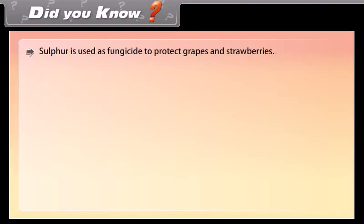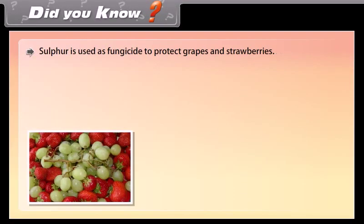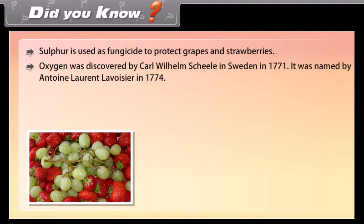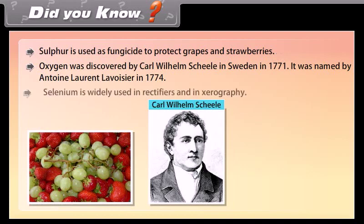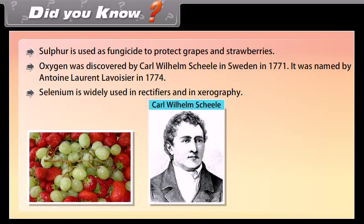Did you know? Sulphur is used as a fungicide to protect grapes and strawberries. Oxygen was discovered by Karl Wilhelm Scheele in Sweden in 1771. It was named by Antoine Laurent Lavoisier in 1774. Selenium is widely used in rectifiers and in xerography.